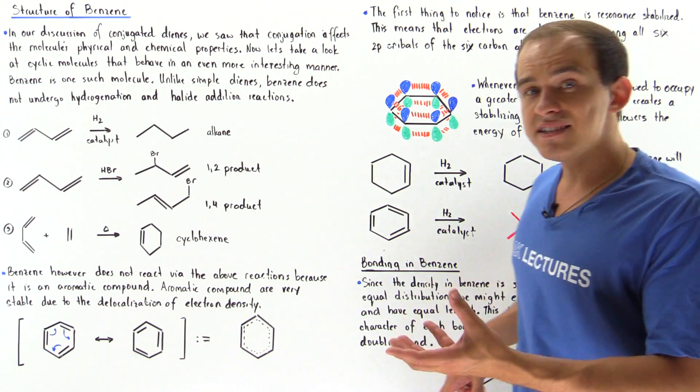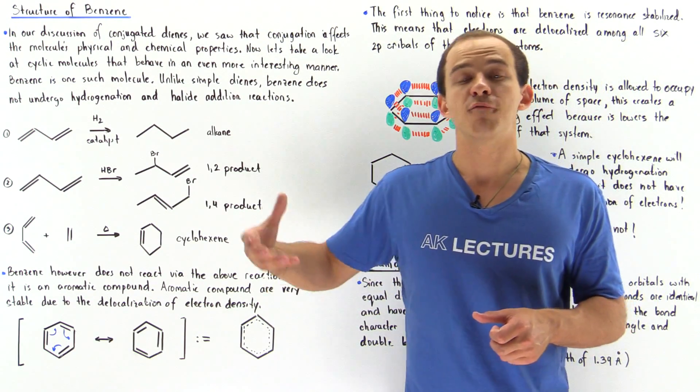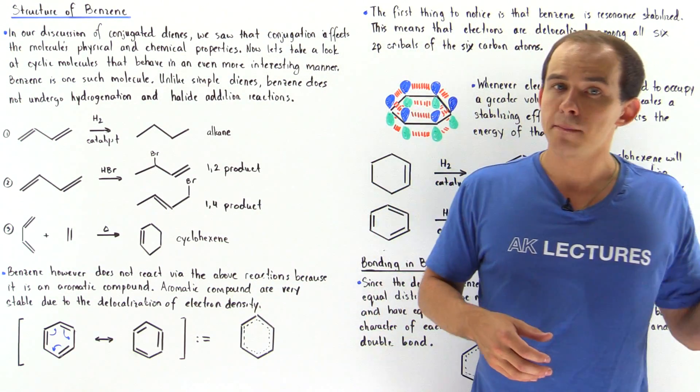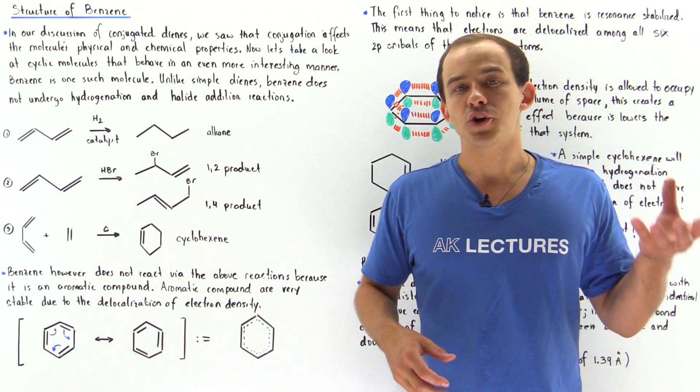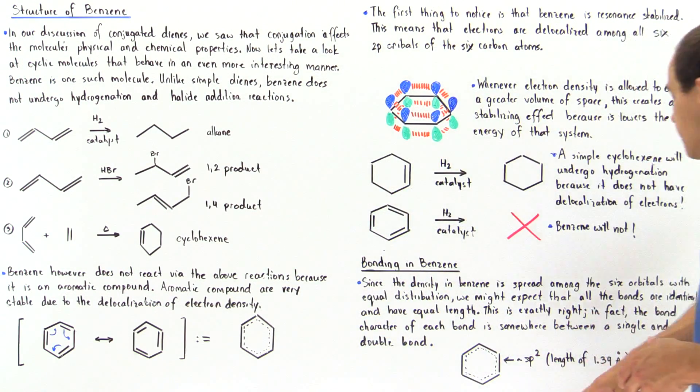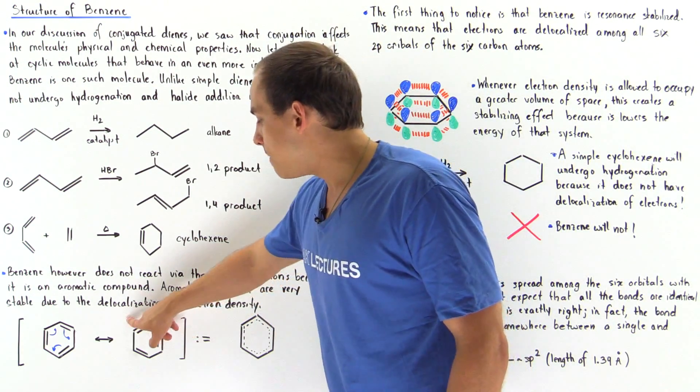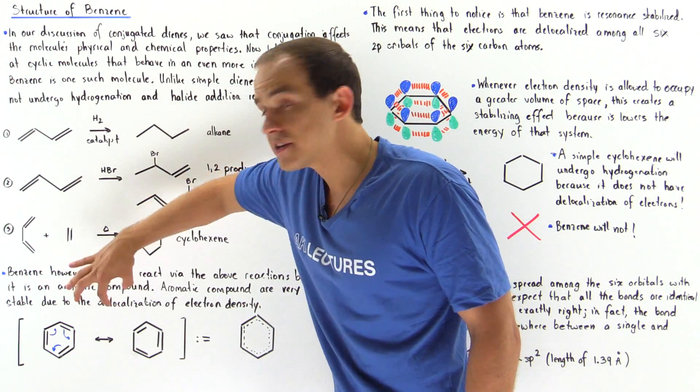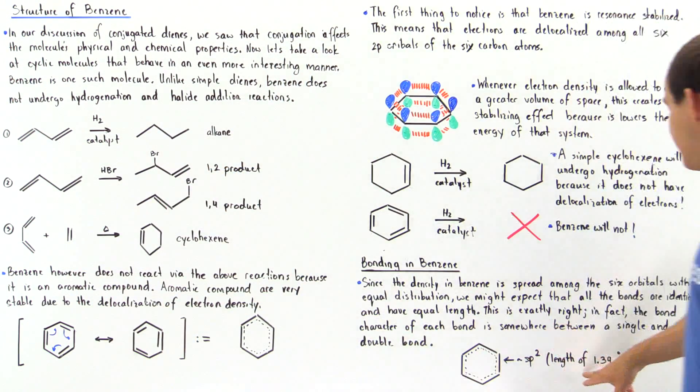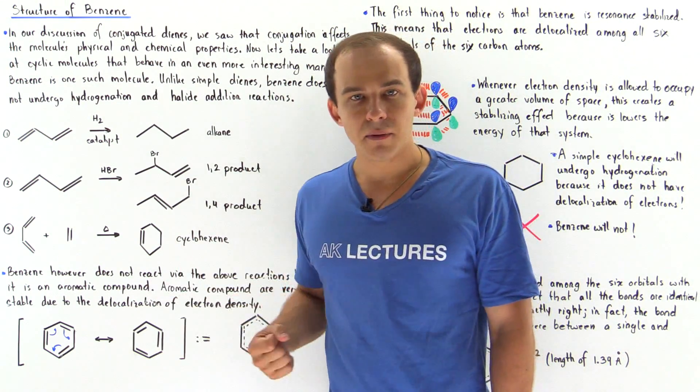So basically, the bond length in benzene is somewhere between a single bond, which is 147 angstroms, and a double bond, which is 132 angstroms. And the average of those two values is about 139 angstroms. So the length of any one of these bonds between our pairs of carbons inside benzene is 139, which is somewhere in between a single bond and a double bond.